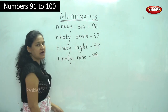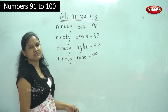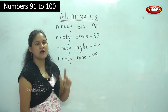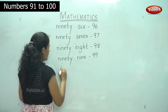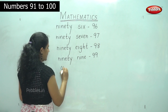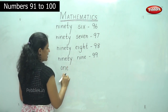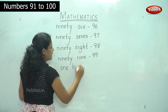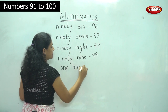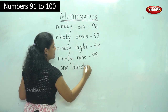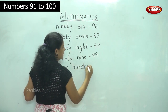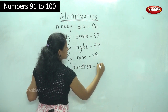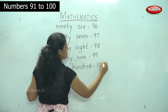For the last number, 100, you will write it as: O-N-E, one, H-U-N-D-R-E-D, hundred — 1-0-0, which is 100.